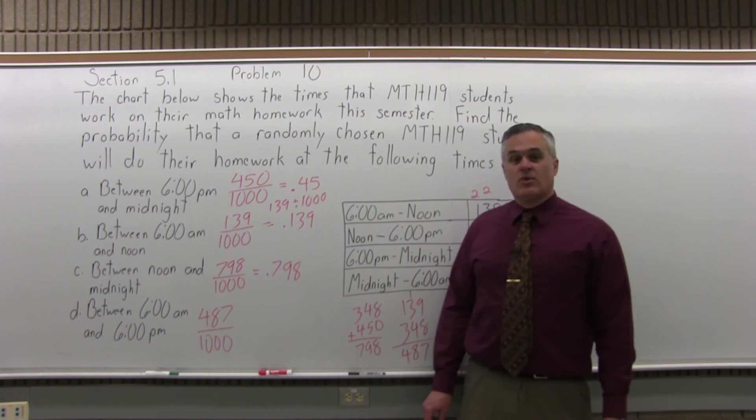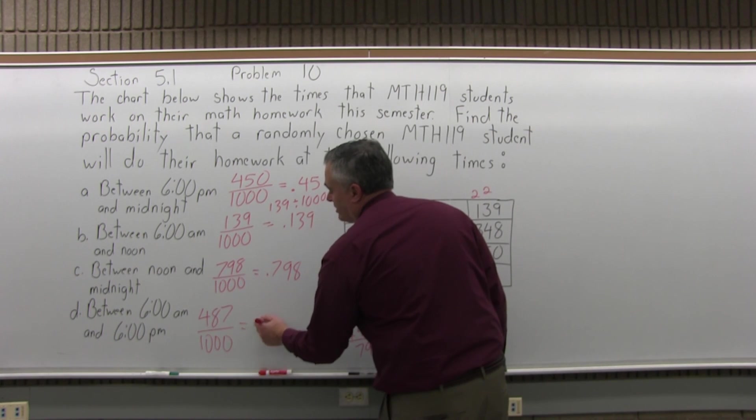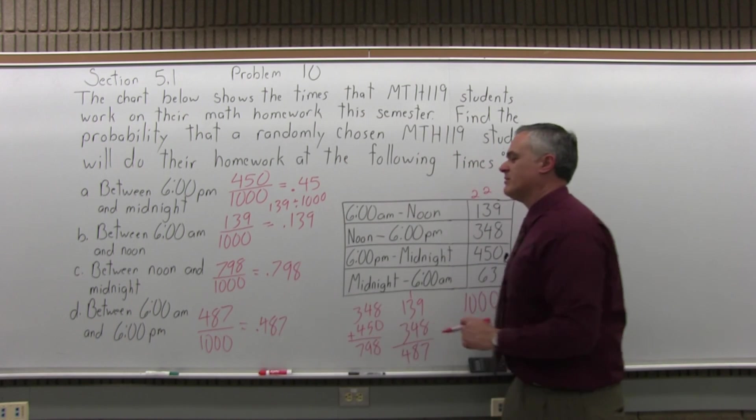So the probability would be 487 over 1,000, which you can, if you want to, write as a decimal .487 or almost 49% probability.